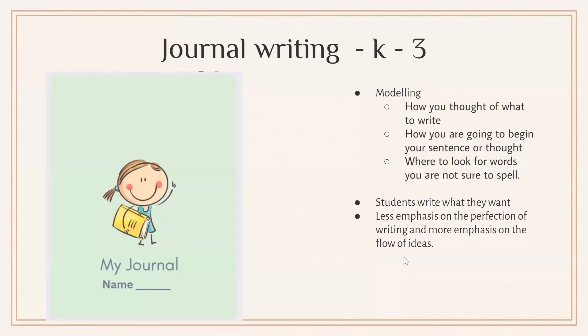Journal writing in K-3 is a really good place for teachers to model what writing looks and sounds like — thinking aloud how to start with a capital, leave spaces between words, form the sentence, and where to look for a word you can't spell. The journal is more of a free way of having students write whatever they want, with less emphasis on perfection and more focus on flow — writing news about themselves, writing what they wish they could do, or writing about whatever they want.